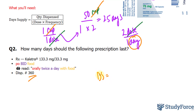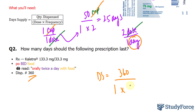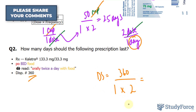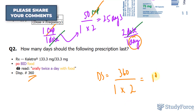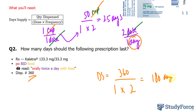So let's go ahead and figure this out using the same formula as before. Day supply is equal to the quantity dispensed — 360 — divided by the dose, which is one as it's not stated, times the frequency twice a day. 360 divided by two gives us a 180-day supply, so half a year.